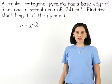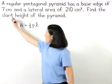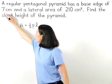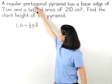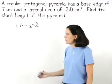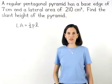However, we do know that the pyramid has a base edge of seven, and since the base is a regular pentagon, we know that it has five congruent sides.